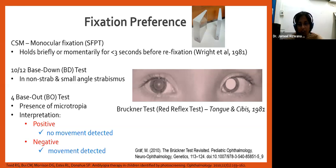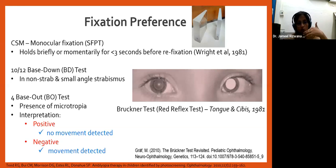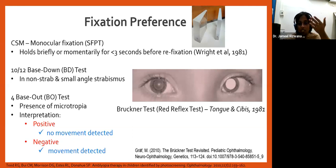The Brückner red reflex test requires caution with microtropia, as both reflexes may appear equally bright. For microtropia, the four prism base-out test is preferable. In anisometropic or strabismic amblyopia this test is valuable; for isometropic amblyopia with high refractive errors, moving further back to two to three meters allows observation of crescents in the reflexes. Modern handheld photorefractors utilize this red reflex principle to estimate refractive error while also showing the red reflex.